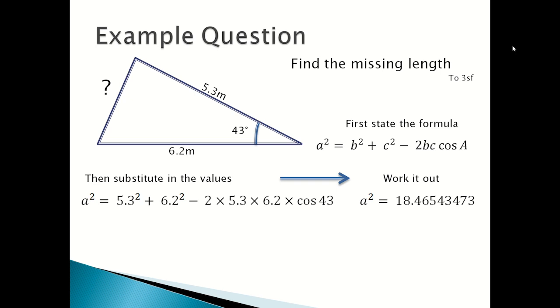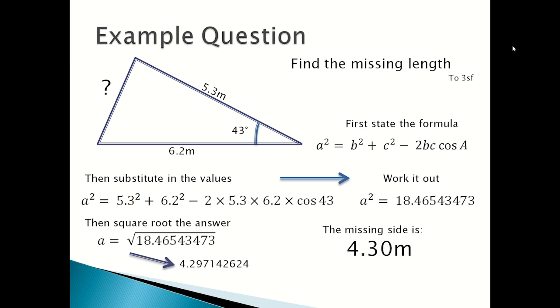So A squared is equal to 18.46543473. Then you would square root the answer. So A equals square root of 18.46543473. So the answer is 4.297142624. But obviously the question wants it to three significant figures, so the missing side is 4.30 meters.